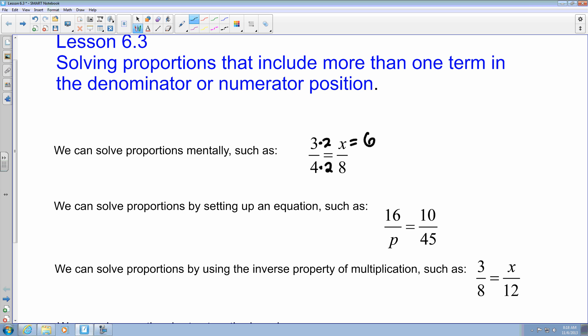You can solve it by setting it up as an equation, such as using the cross product. So if you're going to set it up as an equation, you're going to multiply this, which gives me 10p, and then this equals 16 times 45, which gives me 720, and then simply just dividing both sides by 10, which makes the equation p equals 72. That's probably the most likely one that we've done, and that's probably the one that we've had the most success with.